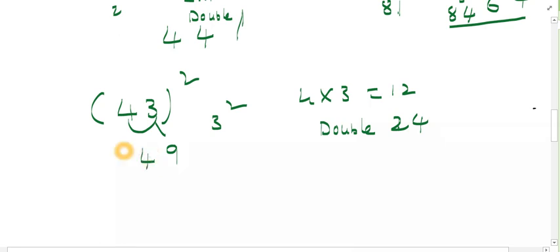And the last step is this one, 4 square. It is 16. 16 plus 2, it is 18. So 1, 8, 4, 9 is the answer.